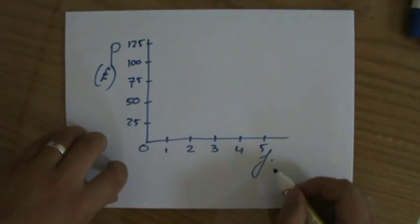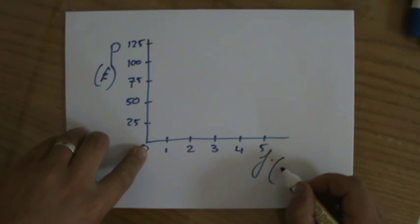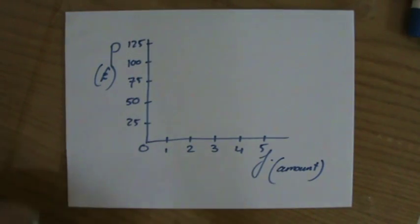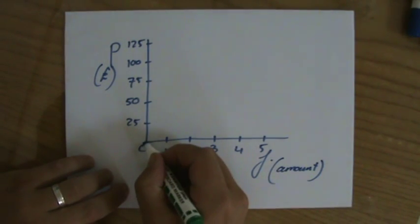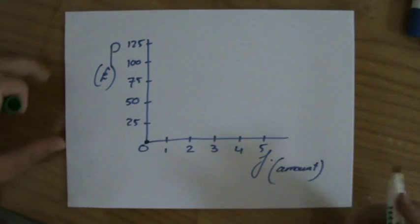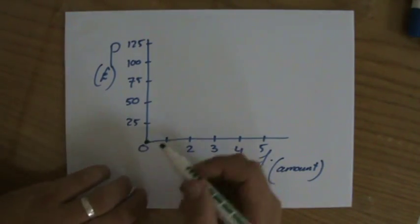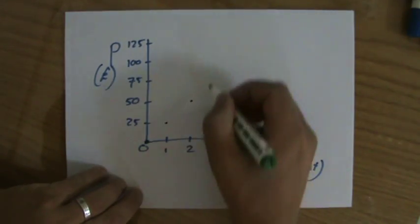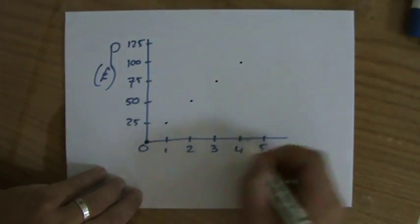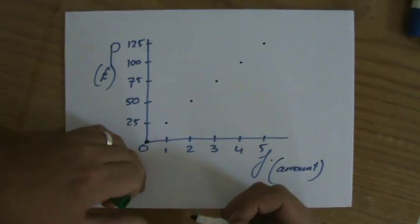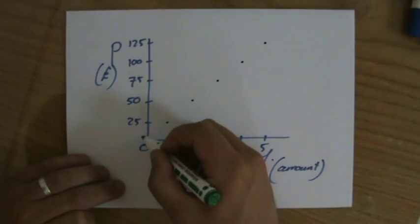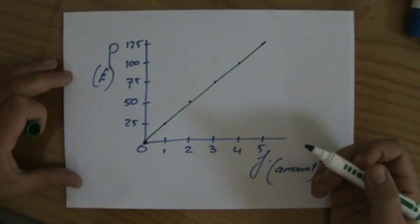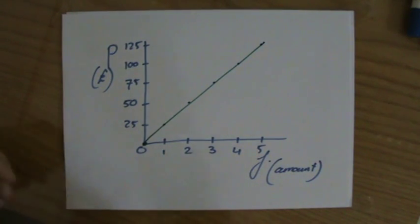These are in pounds, amount of footballs. Well, surely if I buy zero footballs, I'm going to pay zero pounds, otherwise do not go to that store. But if I buy one it's 25, two is 50, three is 75, four is 100, five is 125. So if I would sketch that, that is a line through the origin. This is direct variation.